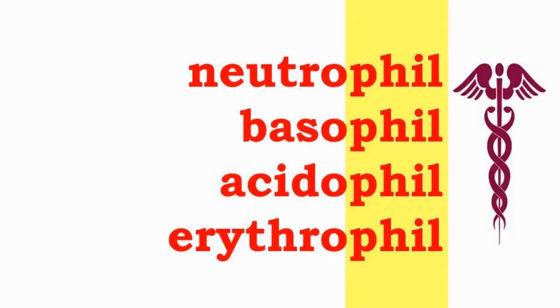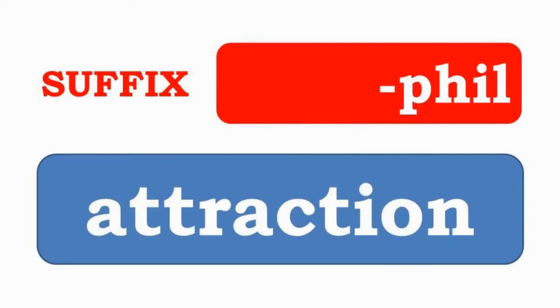Neutrophil, basophil, acidophil, and erythrophil have the suffix -phil, which indicates having an attraction for.